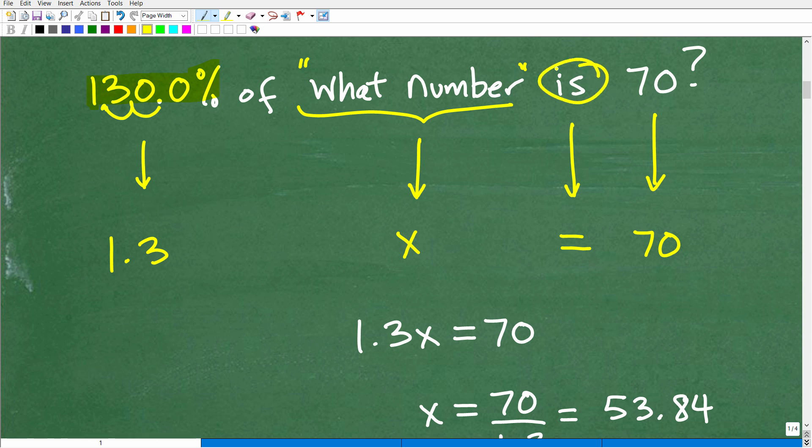Is, when you see the word is in a sentence and you're interpreting this as a mathematical equation, the word is is always the equal sign. So 130% of what number is or is equal to. So this is an equal sign. And of course, this is 70. So we'll write that 70 there.